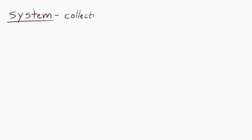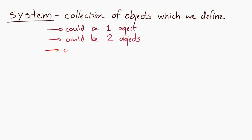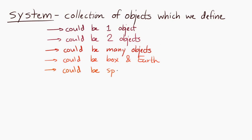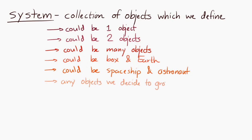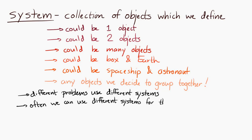Before we start applying the idea of conservation of energy, we have to define something called a system. A system is just a collection of objects — a collection of things that we're going to put in a group. A system could consist of one object, two objects, or lots of objects. It could be a box and the Earth together, or a spaceship and an astronaut. The way we define a system will be different in different problems, and often you can solve a problem using different systems.